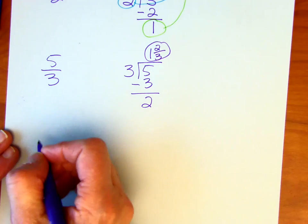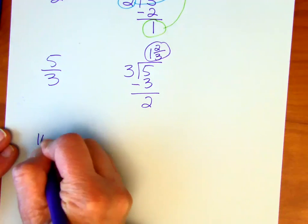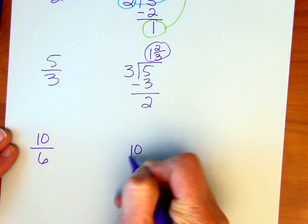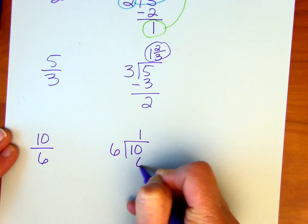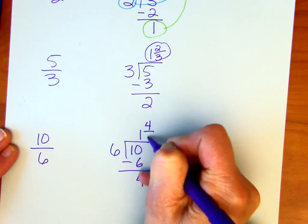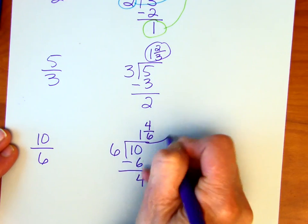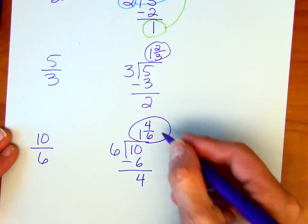And we'll do one more on the list. The ten-sixths. And that's going to be ten divided by six. Six goes into ten once. Find the difference. We get four left over. Four-sixths. Now, later we'll talk about reducing. But for this type of problem, that's okay.